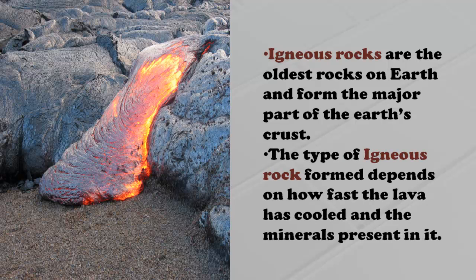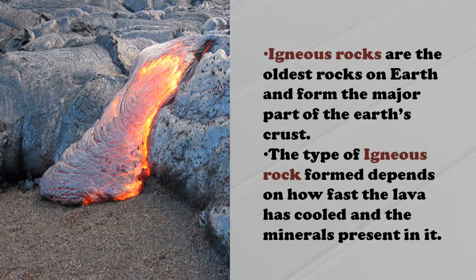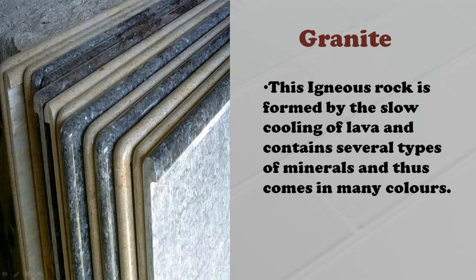Igneous rocks are the oldest rocks on Earth and form part of the Earth's crust. The type of igneous rock formed depends on how fast the lava has cooled and the minerals present in it. Granite is formed by the slow cooling of lava and contains several kinds of minerals, and thus comes in many colors.